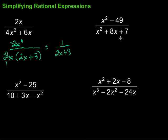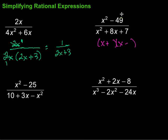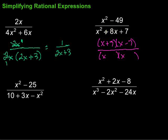Let's go over here and take a look at this one. Factoring is our tool of choice — we want to break up each of those expressions and see if there's something in common that we can cancel out. On top, this looks like a difference of squares, so that will factor as (x + something)(x − something). What squared gives me 49? That would be 7. So x + 7 and x − 7 on top. Then on the bottom, I'm looking for factors of 7 that add up to 8. The signs are going to be plus and plus — factors of 7 that add up to 8 are 1 and 7.